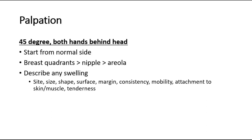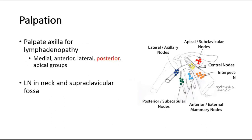Besides this palpation, we also have to palpate the axilla for any palpable lymph nodes. The lymph node groupings include the medial group, anterior, lateral, posterior, and apical groups. This picture shows the lateral axillary nodes, posterior nodes, anterior, medial, and also apical nodes.